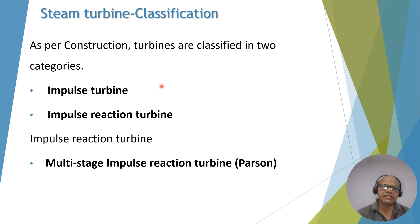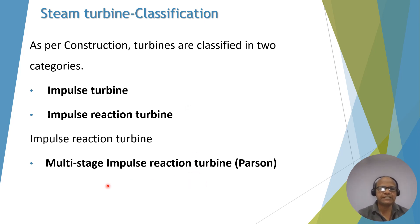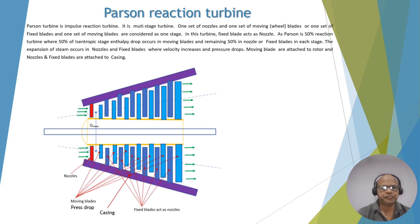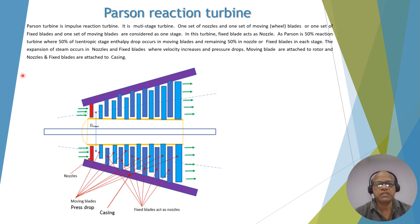Now, the steam turbine classification includes impulse and impulse-reaction turbines. We discussed the impulse turbine in the previous video. In this video, we see the impulse and reaction type. The multi-stage impulse and reaction turbine is the Parsons turbine. We'll discuss the Parsons reaction turbine, which is a schematic multi-stage turbine. One set of fixed blades and one set of moving blades constitute one stage. In this turbine, fixed blades act as nozzles.